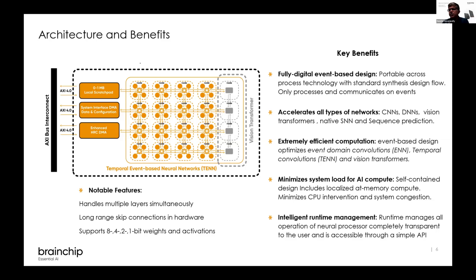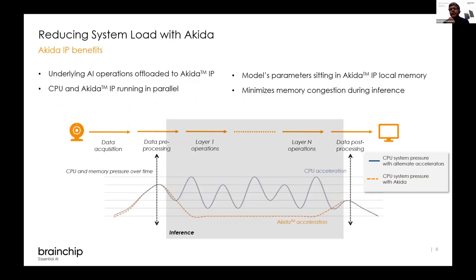With this generation, we're also doing long-wave skip connections in hardware, which should increase the complexity of networks we can handle. We support 8-bit along with 4, 2, and 1-bit rates and activations. We're trying to keep it intelligent but simple to engage so that the IP is a black box with runtime managed through simple APIs. Because it can manage the entire network in hardware, the CPU doesn't need to do much apart from initial preprocessing and post-processing, enabling the accelerator to be combined with a much smaller or less capable CPU to deliver higher-end AI tasks, particularly in vision.